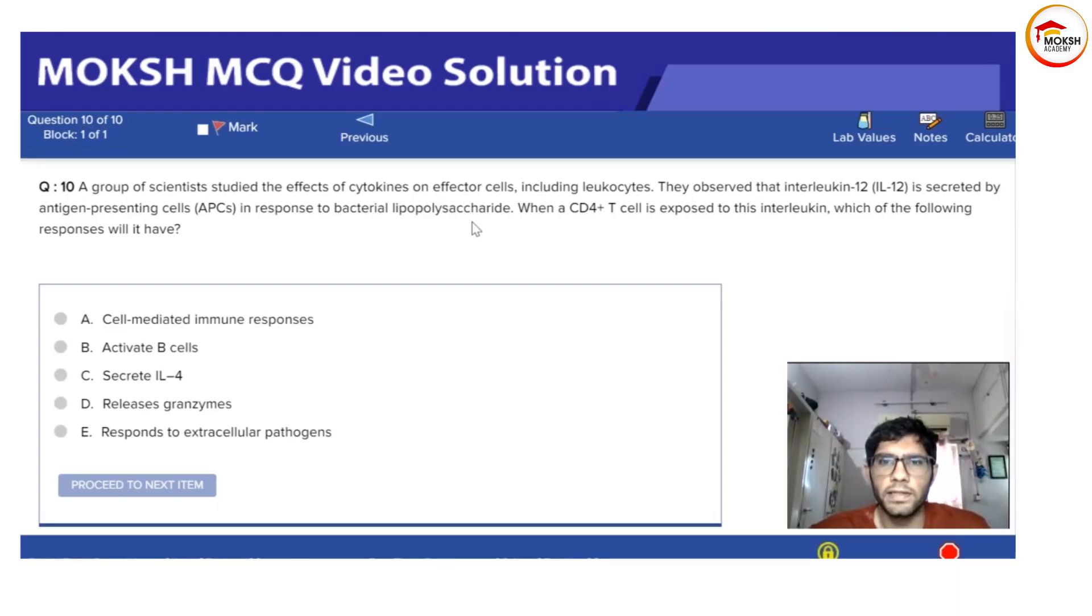We have to find out which CD4 cell will respond when IL-12 is released. I'll read out the question: A group of scientists studied the effects of cytokines on effector cells, including leukocytes. They observed that IL-12 is secreted by antigen-presenting cells in response to bacterial lipopolysaccharide. When a CD4+ T cell is exposed to this interleukin, which of the following responses will it show?